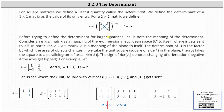Before trying to define the determinant for larger matrices, let us note the meaning of the determinant. Consider an n by n matrix as a mapping of the n-dimensional Euclidean space R^n to itself, where vector x gets sent to matrix A times vector x. In particular, a two by two matrix A is a mapping of the plane to itself. The determinant of matrix A is the factor by which the area of objects change. The sign of the determinant denotes changing of orientation — negative if the axis gets flipped.